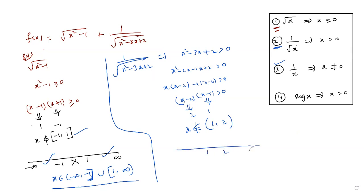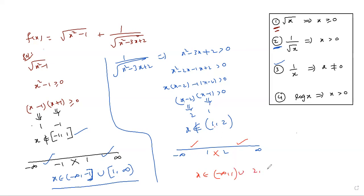Take a number line with 1 and 2 marked, infinity on the right, minus infinity on the left. x does not belong to (1, 2), so x lies on either side. Write the answer: x belongs to minus infinity comma 1 — open bracket for infinity, open bracket for 1 since strictly greater than. Union with 2 to infinity — both brackets open since 2 is also open and infinity is always open.